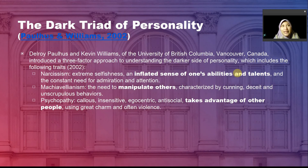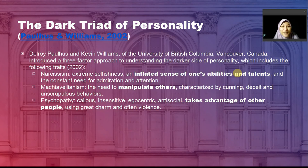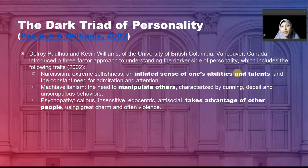Narcissism also reflects the need for admiration and attention. The second dimension is Machiavellianism, inspired by the famous Italian philosopher Niccolò Machiavelli, who suggested we need to do everything necessary to achieve something. Machiavellianism reflects the need to manipulate others in order to gain power and personal influence, and is characterized by cunning, deceit, and unscrupulous behavior.